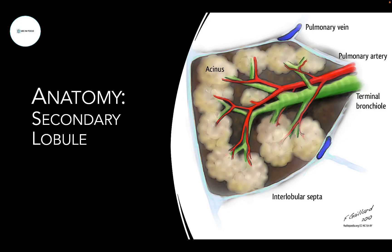We'll start with a quick anatomy reminder. This is the functional unit of the lung — the secondary lobule — which is bordered by the interlobular septa. At the lung periphery, it abuts the pleura. The interlobular septa contains blood vessels and lymphatic vessels. Within the secondary lobule we have terminal airways, alveoli, vessels, and interstitial tissue. In a normal lung, the interlobular septa and interstitial tissues are too thin to resolve, so the airspace dominates, creating a bright hyperechoic white line on ultrasound — the pleura line.